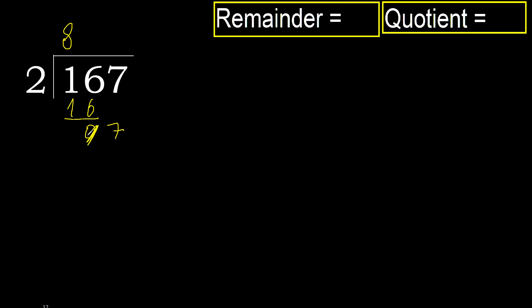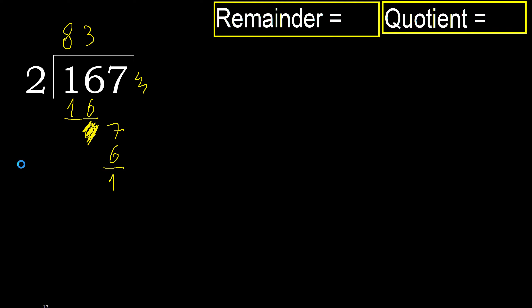Eliminate 0 on this side, bring down 7. 2 multiplied by 4 is greater. Multiplied by 3: 6 is not greater. Ok, 7 minus 6 is 1. Next — that is not a number, therefore finish it.